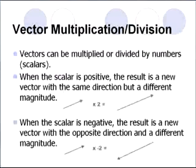When multiplying by a negative number, such as negative 2, this will result in the vector becoming twice the length, but in the opposite direction.